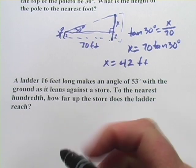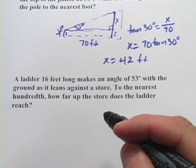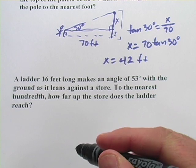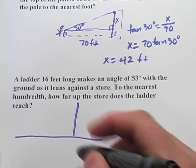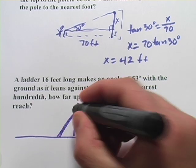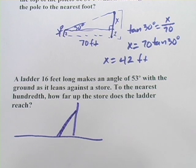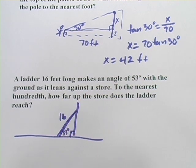This one's a typical trig application problem. It says a ladder 16 feet long makes an angle of 53 degrees with the ground as it leans against a store. So here's our ground. Here's the store. We've got a ladder here leaning up against the wall. And the ladder is 16 feet long, so it looks like we have our hypotenuse there. And it makes an angle of 53, so that would be there with the ground.